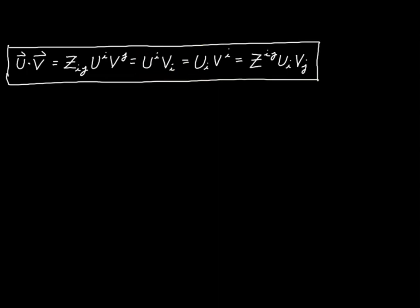Now let's take a few minutes to see how this relationship applies to Cartesian coordinates. If it works for any coordinate system, it's got to work for Cartesian coordinates. Let's remember that the component u_x in Cartesian coordinates is the same as u^1, either as a contravariant or covariant component — the contravariant and covariant objects in Cartesian coordinates are identical. The same is true for u_y = u^2, u_z = u^3, and likewise for the v components.